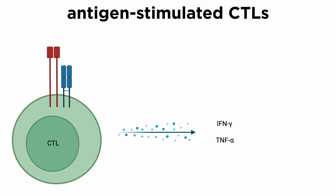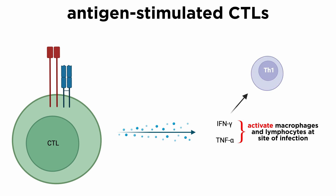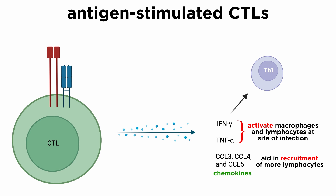Antigen-stimulated CTLs most notably produce interferon gamma and TNF. These potent inflammatory cytokines activate macrophages and lymphocytes at the site of infection. Interferon gamma helps establish a T helper cell 1, or Th1, response and further stimulates differentiated CTLs. CTLs also secrete a number of chemokines including CCL3, CCL4, and CCL5, that aid in recruitment of additional lymphocytes into the immune reaction.